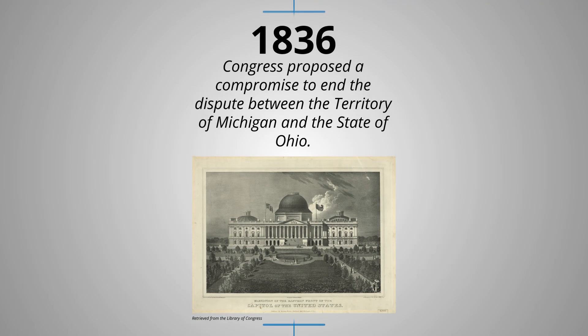In 1836, Congress proposed a compromise to end the dispute between the territory of Michigan and the state of Ohio. A compromise is when both sides give up something so they can settle a disagreement. Congress proposed that Ohio take the Toledo Strip, and in return, Michigan would become a state and also get the entire Upper Peninsula, which turned out to be rich in resources.